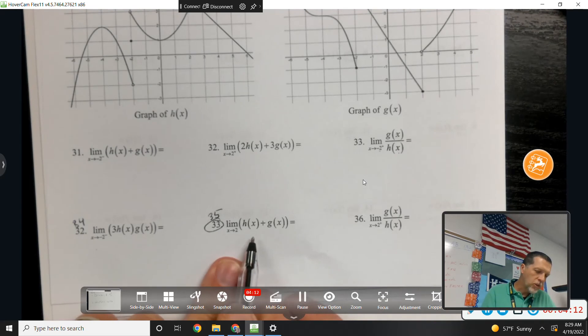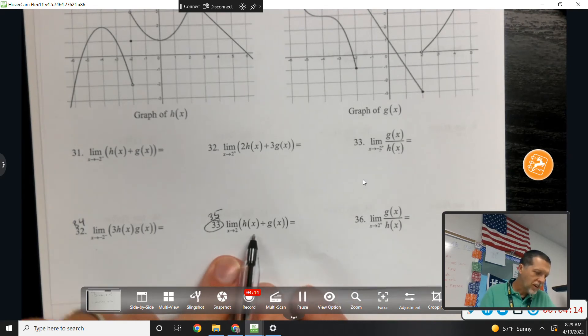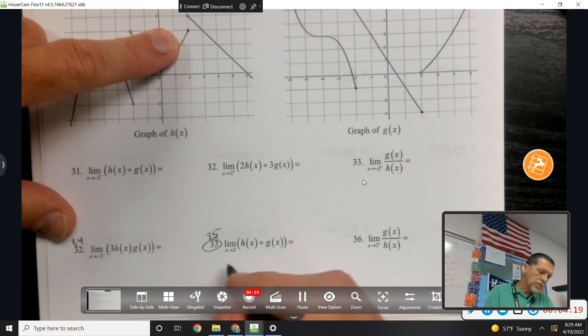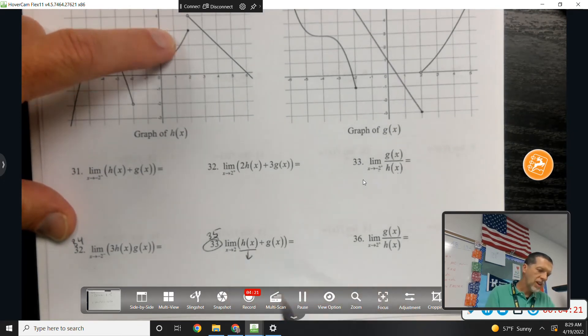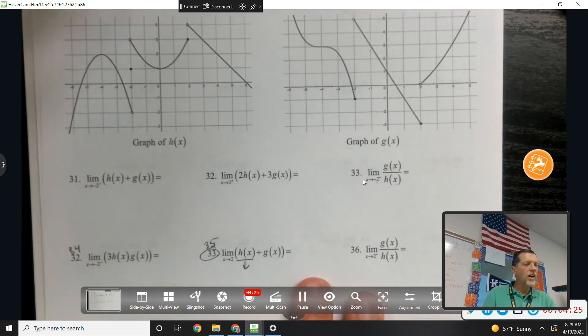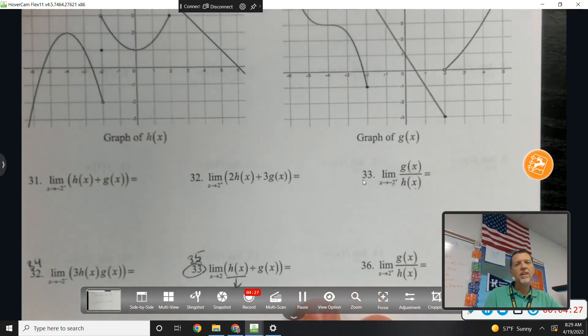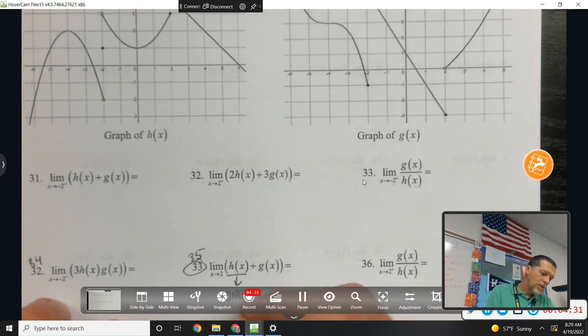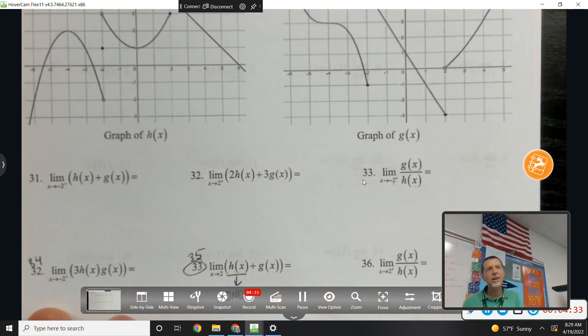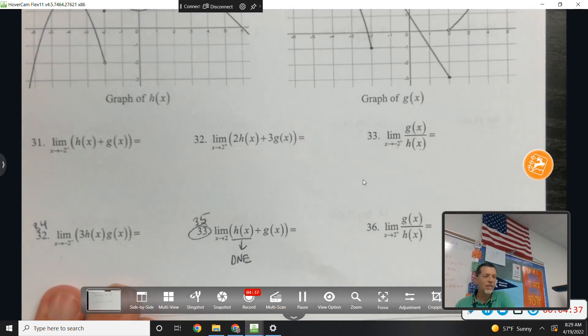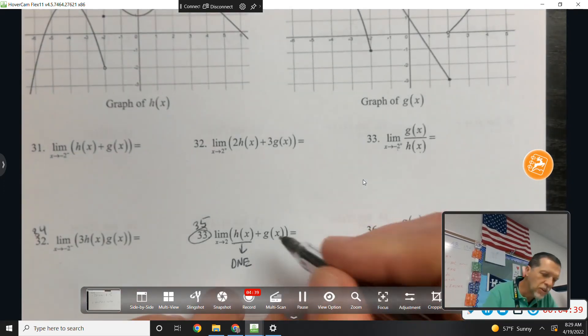So, the other 33. x approaches 2 of h of x plus g of x. So, as x approaches 2 of h of x, what's this limit? As x approaches 2 of h of x. That's DNE. Well, I can kind of stop the problem right there, because DNE plus anything is not going to exist.